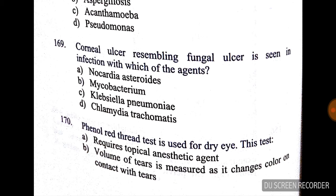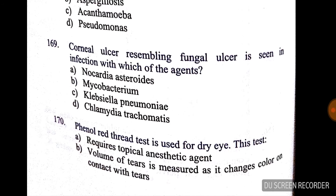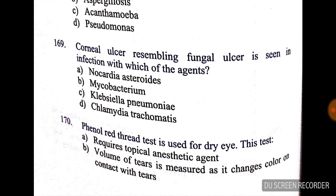Question number 169: corneal ulcer resembling a fungal ulcer is seen in infection with which agent? It is mainly due to Klebsiella pneumoniae. Question number 170: the phenol red thread test is used for dry eye. This test measures option B — volume of tears, as it changes color on contact with tears.